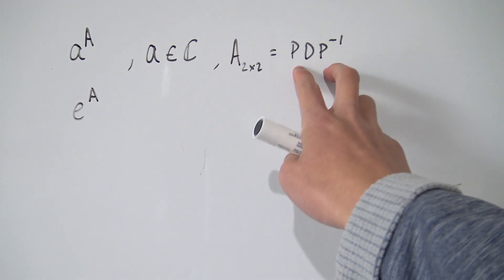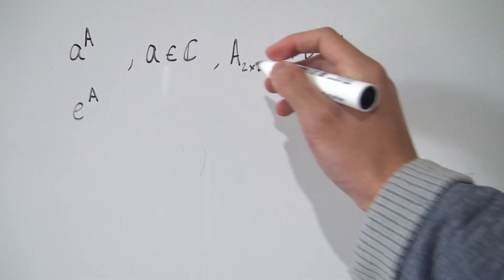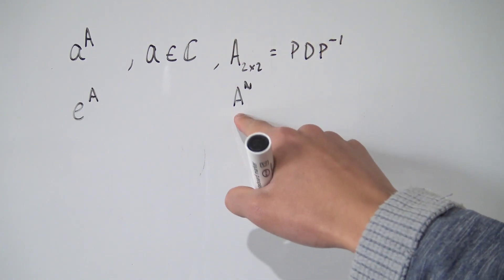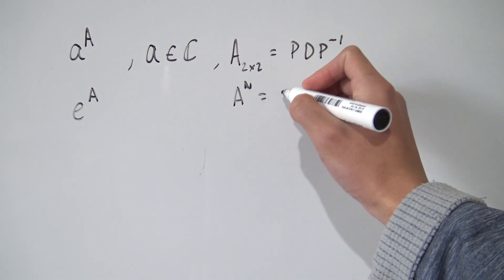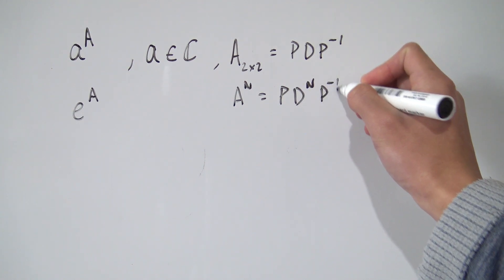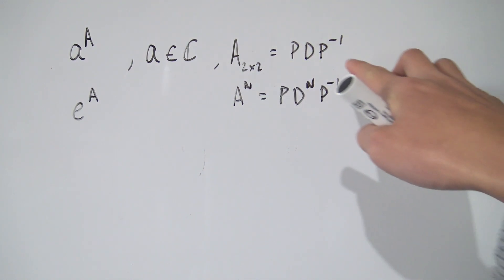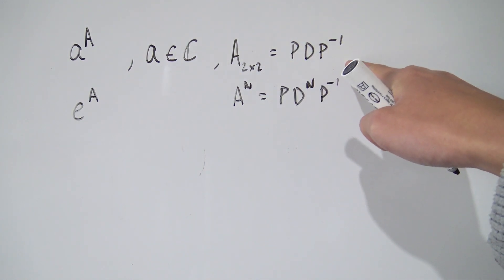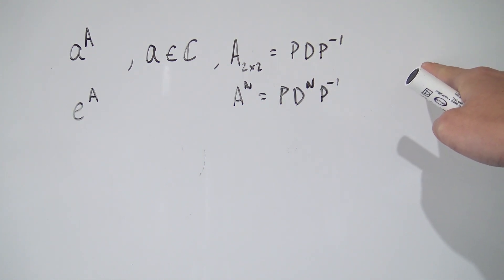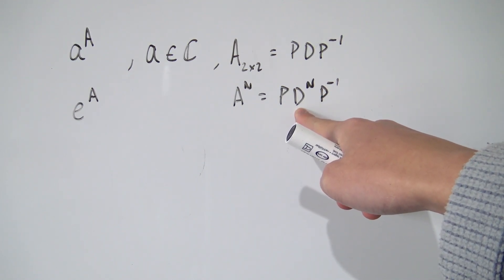We want A to be a diagonalizable matrix because if A is diagonalizable, we can define powers of A. Specifically, A raised to the nth power equals P D to the n times P inverse. If you imagine multiplying this out n times, consecutive P inverse and P pairs cancel out, leaving a bunch of D's in the middle that combine to make D to the n.